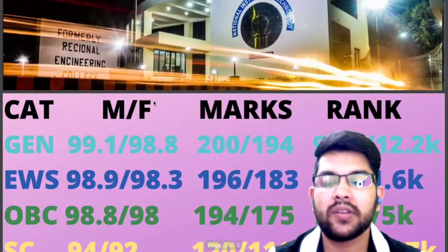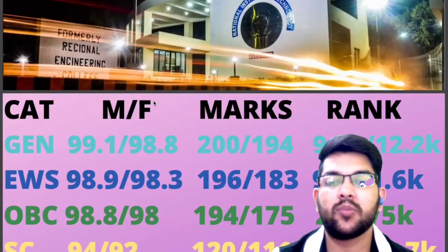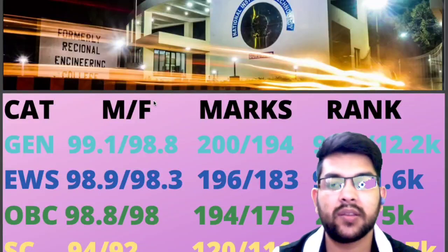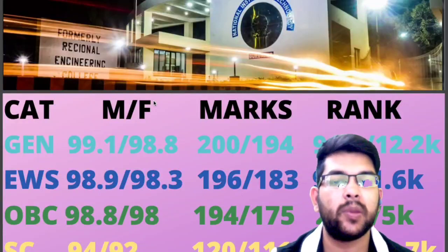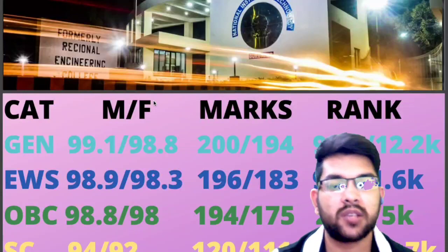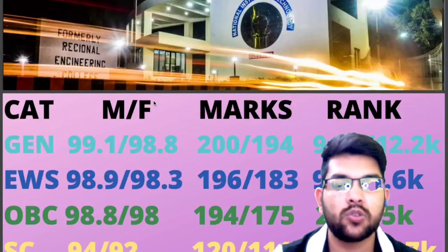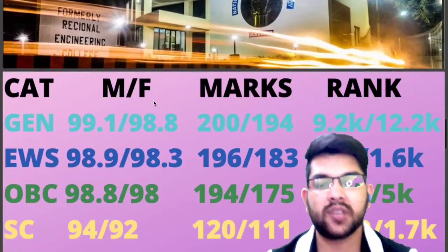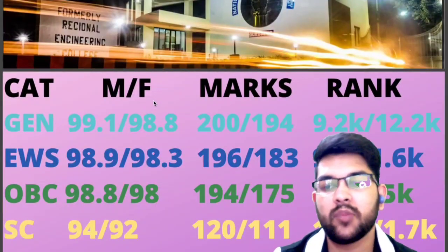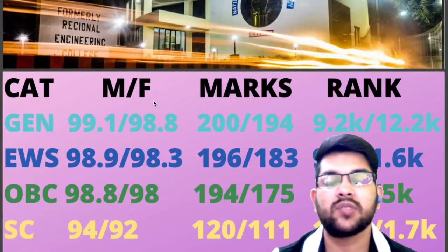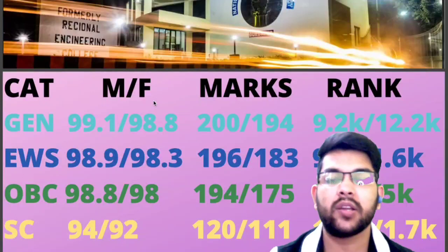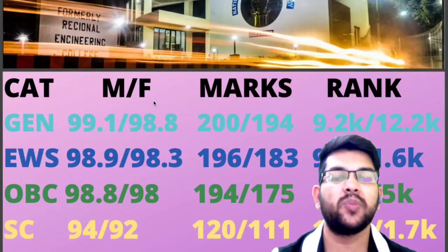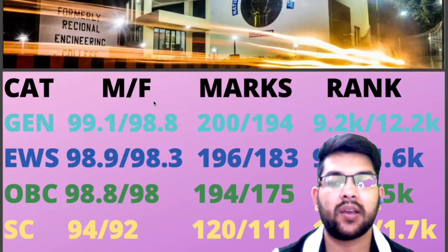For EWS category in top 10 NIT, percentile required is 98.9 for male and 98.3 for female, marks will be 196 and 183, and the EWS category rank will be 920 and 1,600. For OBC category, percentile should be 98.8 for male and 98 for female, marks 194 and 175, and OBC category rank will be 2,800 and 5,000.